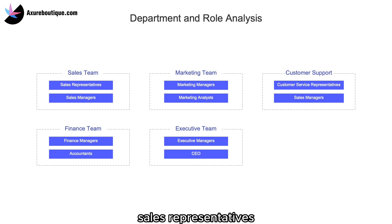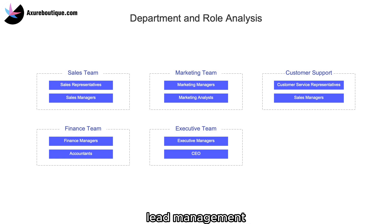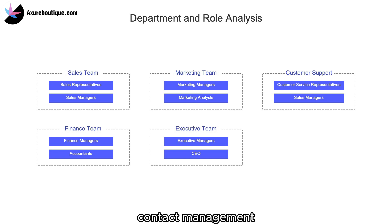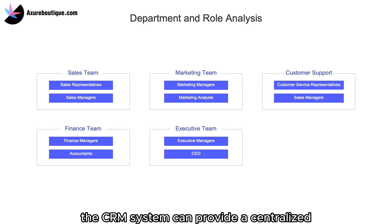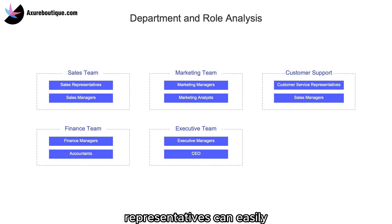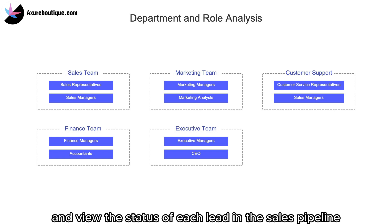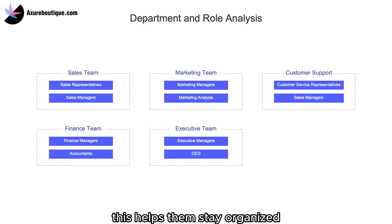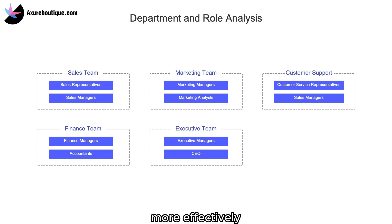Sales team — Sales representatives. One of their core demands is efficient lead management. In a CRM system, they benefit from features such as lead tracking, contact management, and task management. The CRM system can provide a centralized platform where sales representatives can easily track and update leads, schedule follow-ups, and view the status of each lead in the sales pipeline. This helps them stay organized, prioritize their efforts, and close deals more effectively.